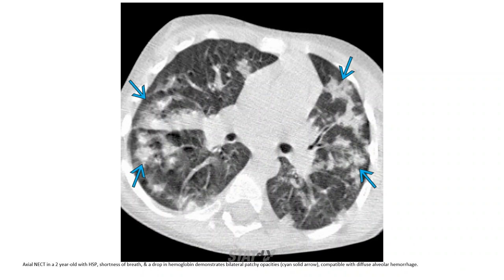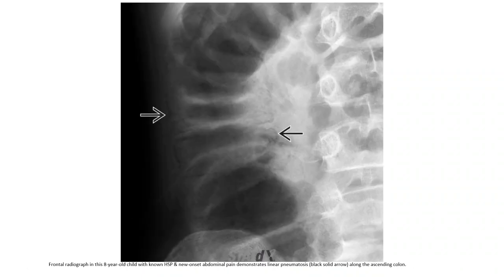Non-contrast CT in a two-year-old with HSP, shortness of breath, and a drop in hemoglobin demonstrates patchy bilateral opacities compatible with diffuse alveolar hemorrhage. A radiograph in an older child with HSP and new-onset abdominal pain demonstrated linear lucency along the ascending colon.